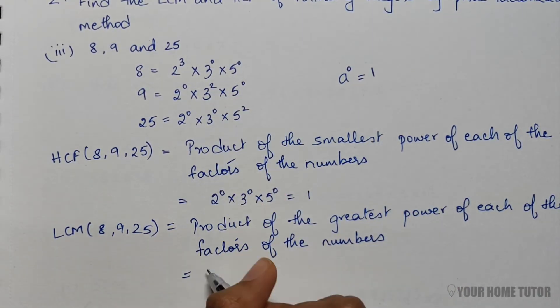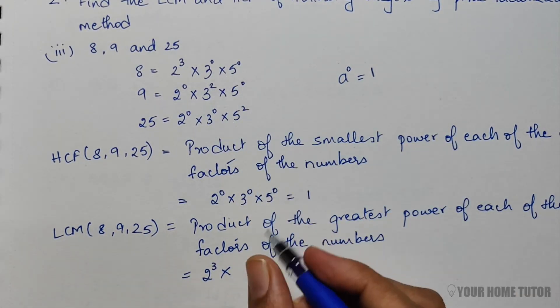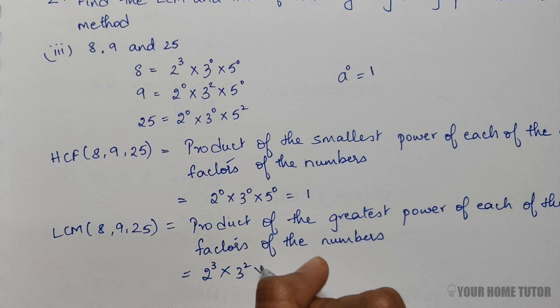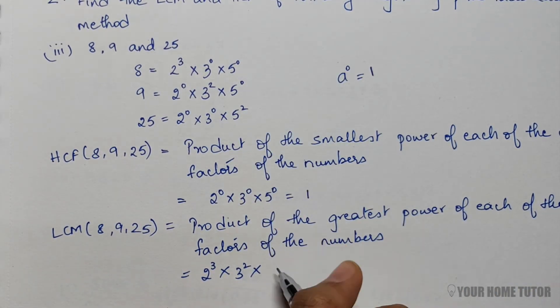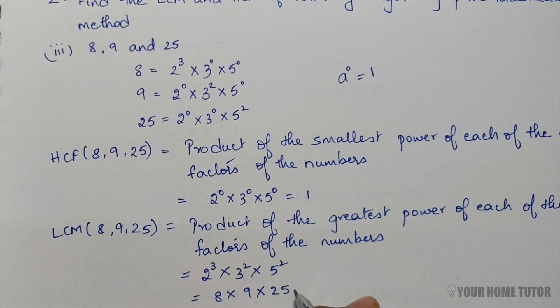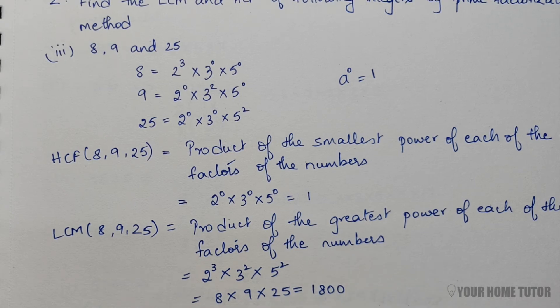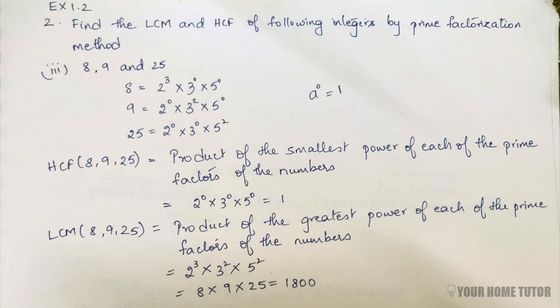For 2, the greatest power is 2³. For 3, the greatest power is 3². For 5, the greatest power is 5². So that's 2³ × 3² × 5² = 8 × 9 × 25 = 1800. Take a screenshot or download the solution link from the description box below.